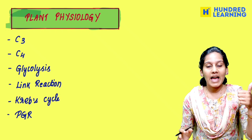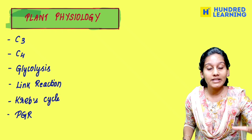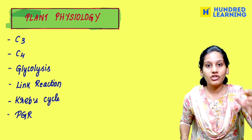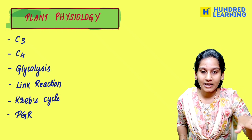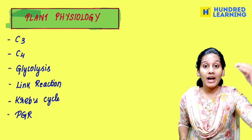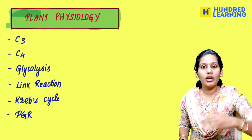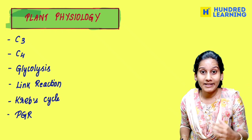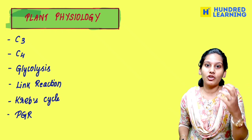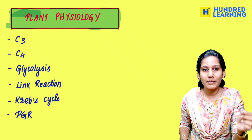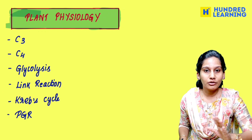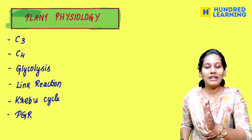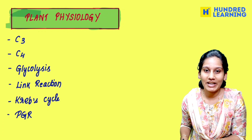C3 and C4 cycle, glycolysis, link reaction — in this chapter you can complete it. You can read the table, column formula. At least read a few notes, and you can compare and revise. It will be very easy.